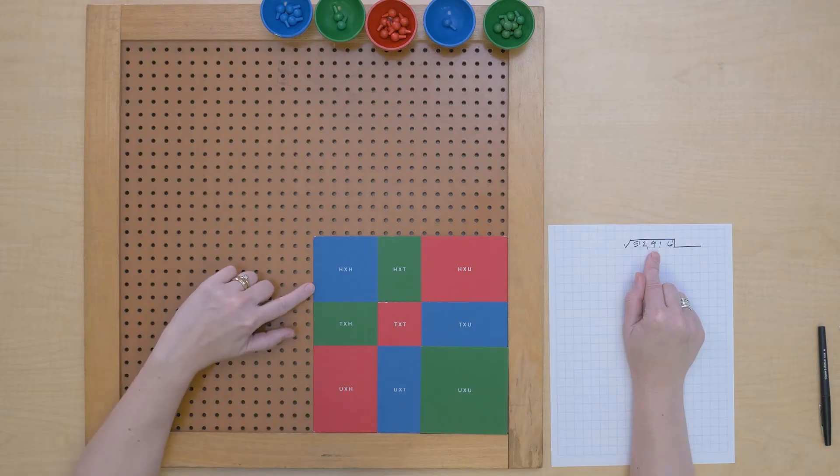Let's do another square root problem today. Let's find the square root of 52,916. So that's a three digit root.